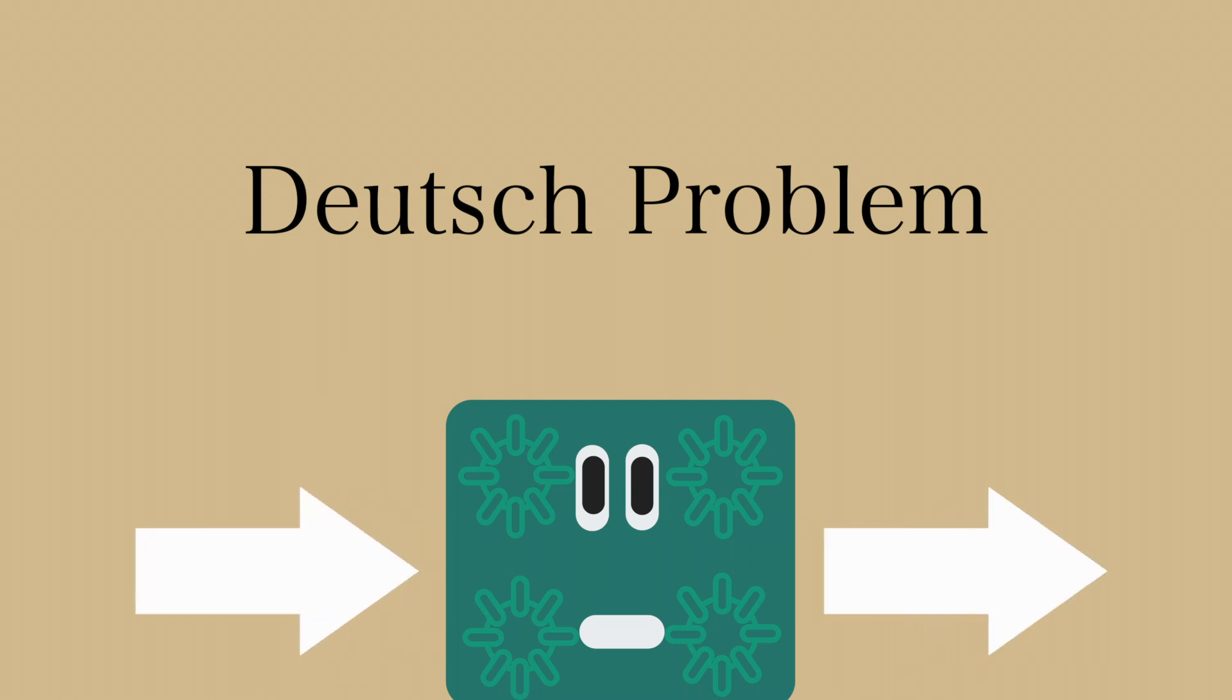This oracle can produce two types of outputs. A constant output, which outputs 0 regardless of the input, or 1 regardless of the input, or a balanced output, which outputs an equivalent number of 0s and 1s.